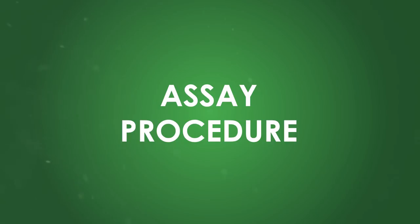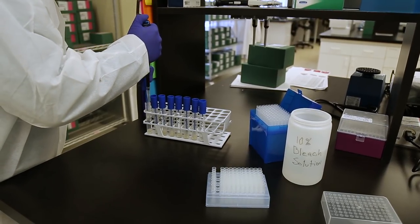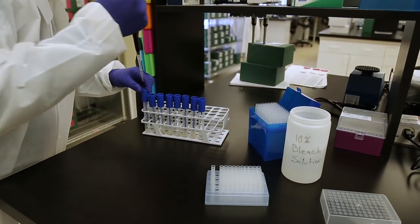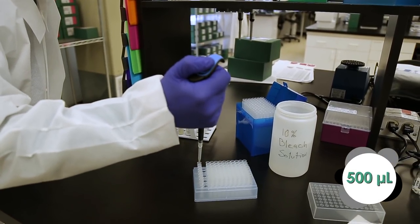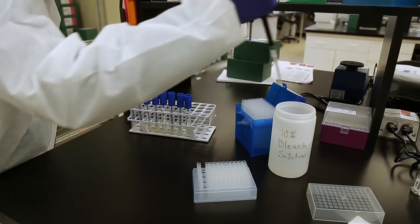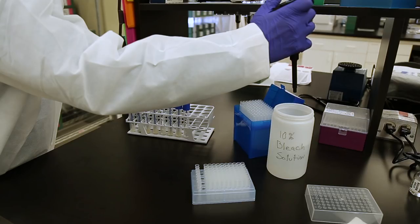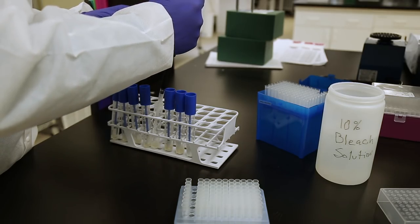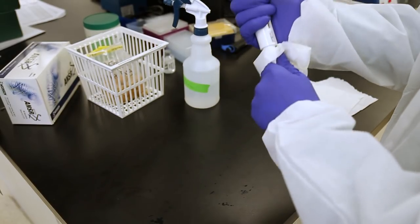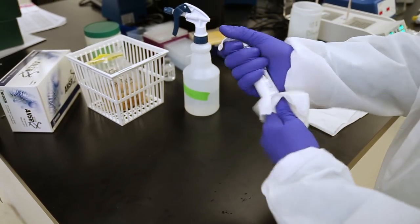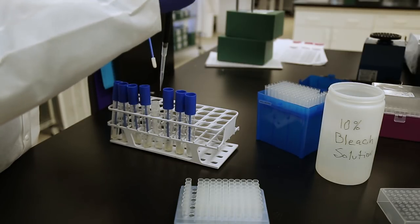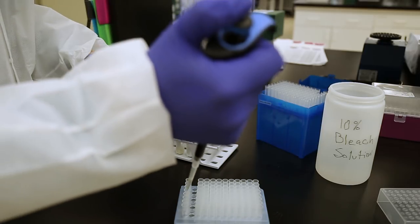Assay procedure. Using the long pipette tips and taking care not to touch the inside of the tube with the pipetter, pipette 500 microliters from the tube to the correspondingly labeled cluster tube. Eject the pipette tip into the 10% bleach solution. If you touch the pipette shaft to the inside of the tube, give the pipette a wipe with a paper towel soaked in 10% bleach, dry, and then proceed to the next sample.